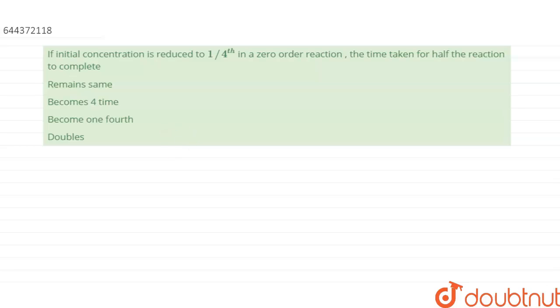Hello everyone, the question is: if the initial concentration is reduced to 1 by 4 in a zero order reaction, the time taken for half the reaction to complete is? We have been given 4 options.